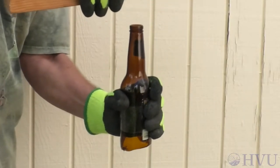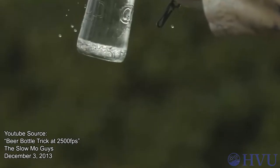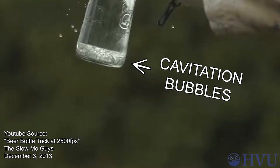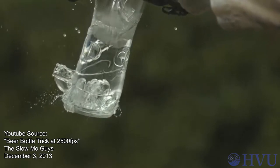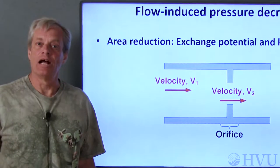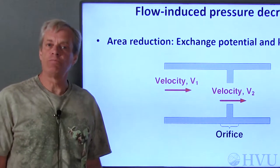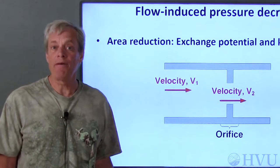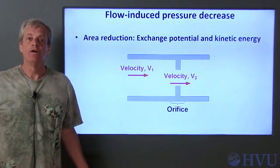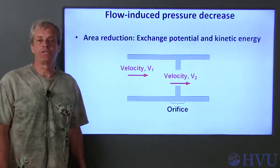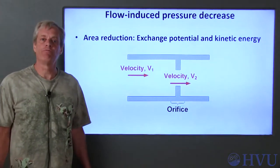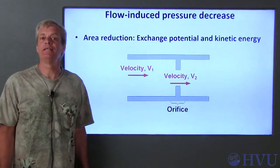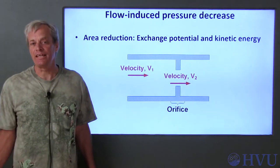If the cavitation bubbles are near or on a surface, these pressures can cause erosion and pitting of the surface. Now let's look at some flow phenomena that cause fluid pressures to drop and can lead to cavitation. Fluid pressure reflects the fluid's potential energy, while fluid flow velocity indicates kinetic energy.